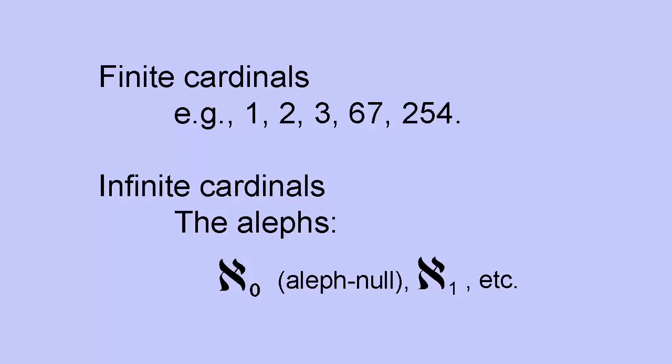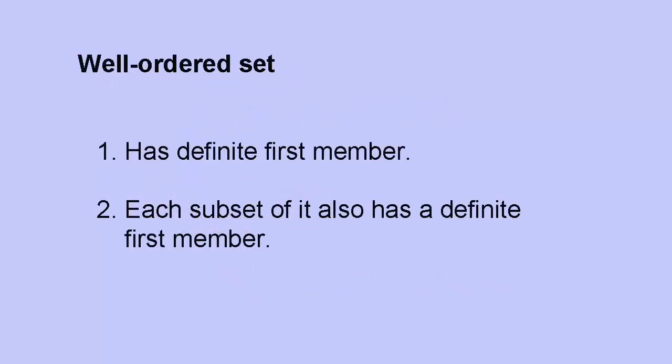For finite sets, the difference between the size of a set given by a cardinal number and its length given by an ordinal number is so slight as to be almost pedantic, but in the case of infinite sets, Cantor realized, these are two very different things. To grasp how different they are, we need to understand the idea of a well-ordered set. A set is well-ordered if it satisfies two conditions. First, it must have a definite first member, and second, each subset of its members must also have a first member.